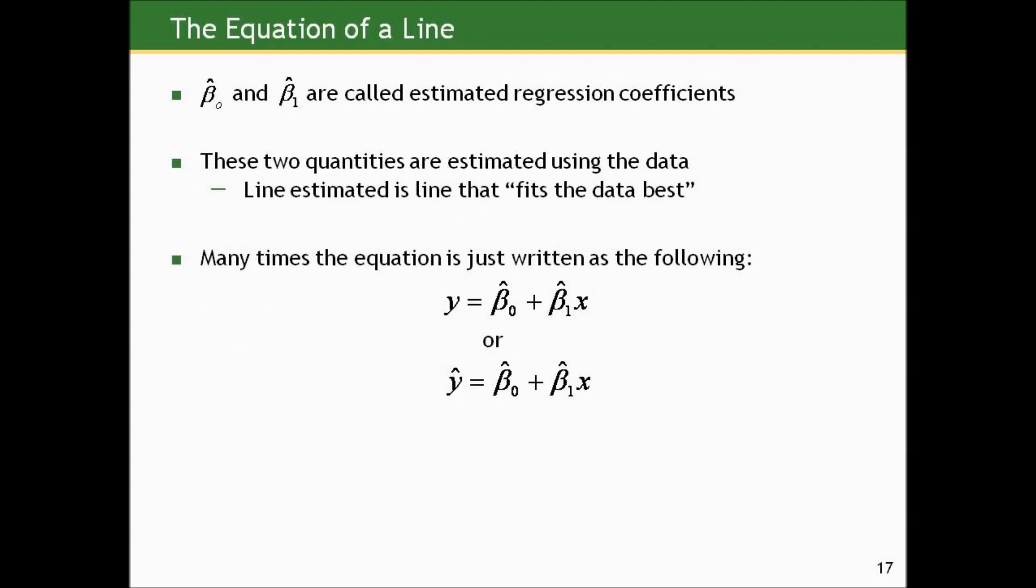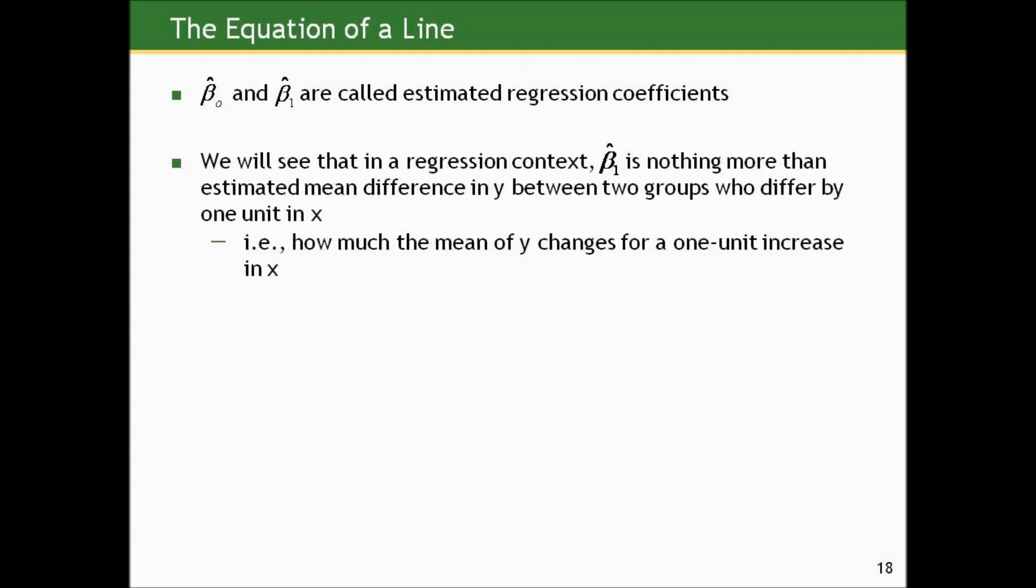The estimated intercept β0_hat and the estimated slope β1_hat are called estimated regression coefficients. These two quantities estimate the line that fits the data best. What we're really doing is relating the average y value for a given x, whether we write it as y, y_hat, or E(y).